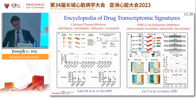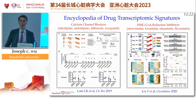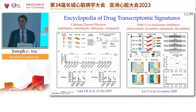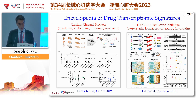For the past several years, we've been systematically doing what we call creating an encyclopedia of drug transcriptomic signatures. Shown here, I highlighted two papers. One on the left is on calcium channel blockers — nifedipine, amlodipine, diltiazem, verapamil. These are very common calcium channel blockers, tested on engineered heart tissues. We look at the response of engineered heart tissues among different individuals to these calcium channel blockers.